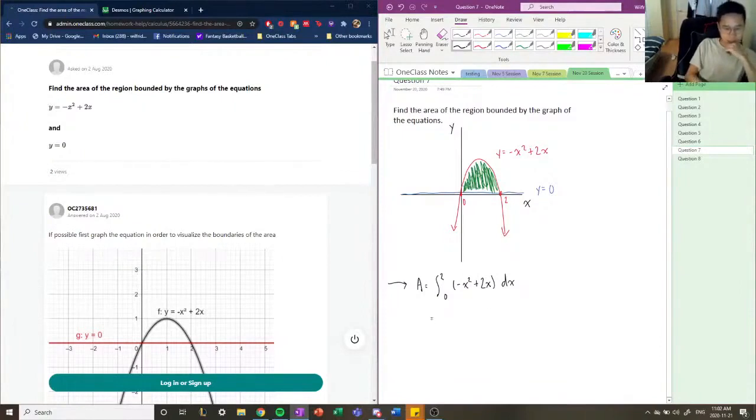All right, so using the laws and the properties that we used last time in the question, we're going to integrate them using the addition rule, which suggests that we can break these up into the integral of negative x squared dx plus the integral of 2x dx.